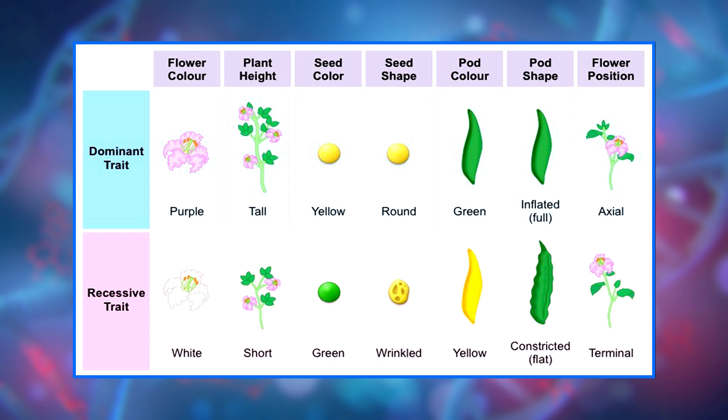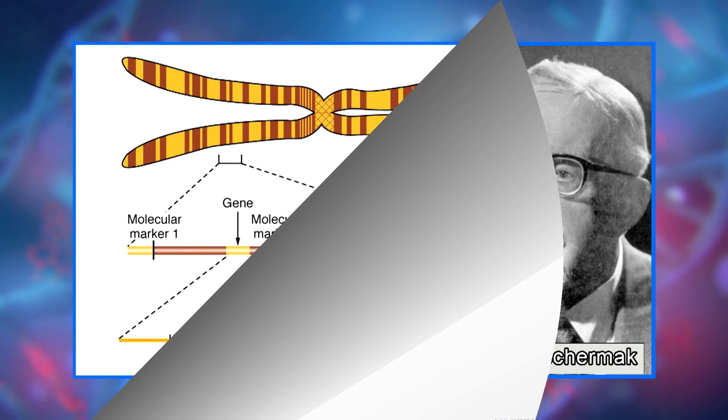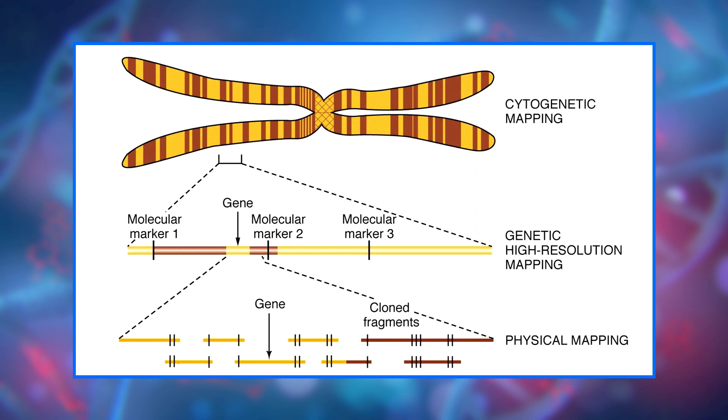It wasn't until 1865 that an Austrian monk named Gregor John Mendel found that individual traits are determined by discrete factors, later known as genes, which are inherited from the parents to the offspring. His rigorous approach transformed agricultural breeding from an art to a science. However, Mendel's work was not appreciated immediately. The science of genetics really began with the rediscovery of Mendel's work at the turn of the 20th century by Tschermak, Hugo de Vries, and Karl Correns. The next 40 years saw the elucidation of the principles of inheritance and genetic mapping.